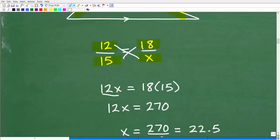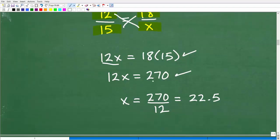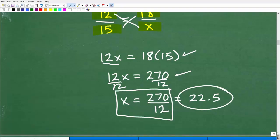So 12 times X, 12X, 15 times 18, that's 18 times 15, that's 270. Okay, so now I have 12X is equal to 270. Divide both sides of the equation by 12. And you get X is equal to 270 divided by 12, which is 22.5. And if you got that right,